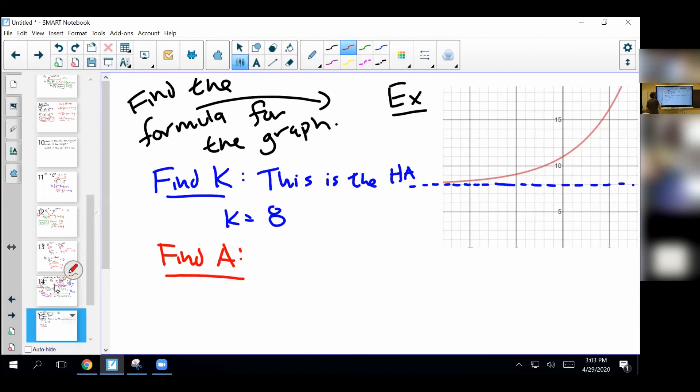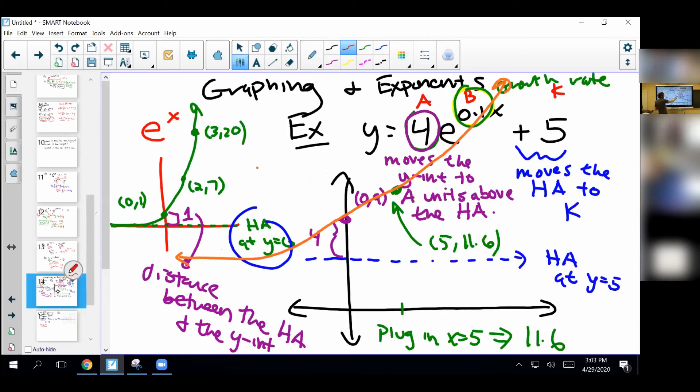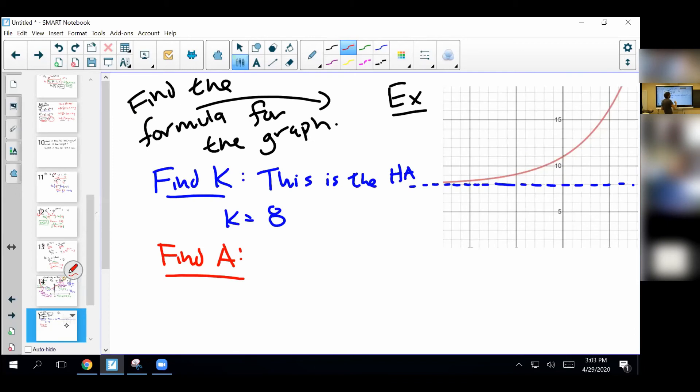Okay, next step, that's pretty quick. Next step is going to be to find a. So a, if you remember, was basically this distance between the y intercept and the horizontal asymptote and that's basically exactly what it is over here too. So it's this distance right here, so it's basically the y-int minus the HA. If you understand that notation, it's this distance right here which is three. So a is going to be equal to three.